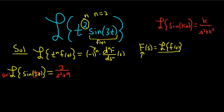Now we have to differentiate it two times because n is 2. If it were 3, you'd do it 3 times; if it were 10, you'd do it 10 times. We can bring 3/(s²+9) upstairs, writing it as 3 times (s squared plus 9) to the negative 1, and now we can take the derivative of this.